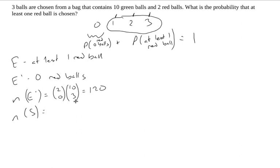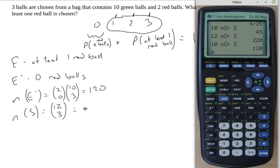N of S here is there are a dozen balls and I'm choosing three of them. Twelve choose three, and that's actually on my calculator already. That's 220.